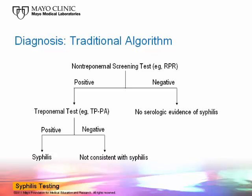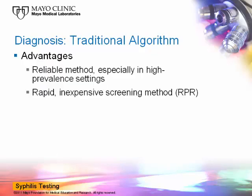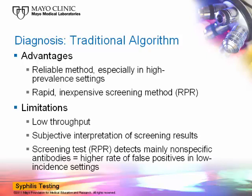This traditional algorithm has been in place for decades and has several advantages, including the fact that it's a reliable method, especially in high prevalence settings. In addition, this algorithm utilizes a rapid, inexpensive screening method that is economical and easily implemented in most hospitals and small clinics. However, this approach has limitations, including low throughput and subjective interpretation of the screening RPR results. This subjectivity, along with the fact that RPR detects mainly nonspecific antibodies, can translate into higher rates of false positive results, especially in low incidence settings.